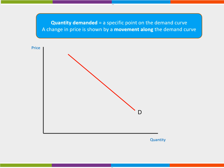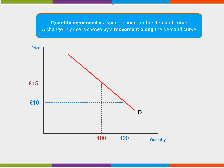At a price of £15, consumers demand 100 units. If price was to decrease to £10, demand would increase to 120 units. This is shown by a movement along the demand curve from 100 to 120 units.